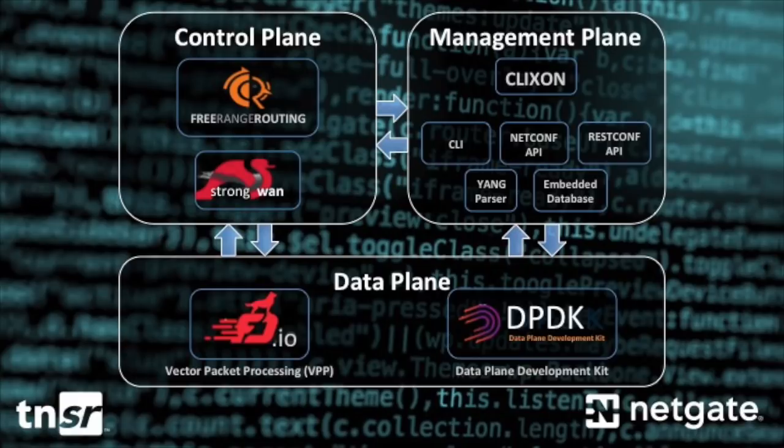This allows individual software services — for example, a routing code base — to be progressed and sourced independently. You may have heard terms like network function virtualization and software-defined networking. Software architected at a more modular level, as opposed to a monolithic vendor-proprietary approach, is central to this progression.